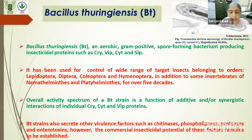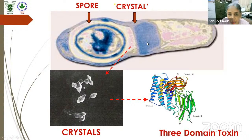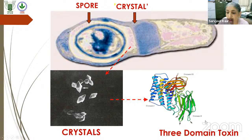In addition to cry proteins, Bt also produces certain other virulent factors such as chitinases, which have important commercial roles. This is a picture of the exosporium showing the Bt spore and the crystal alongside it. We distinguish Bt from other Bacillus species by the presence of these crystals. The crystals can be of different shapes — here bipyramidal crystals are shown — and these are our crystal toxins, which are three-domain toxins. This is the three-dimensional protein structure of the crystal protein shown.